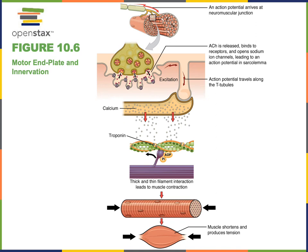The mechanism of excitation-contraction coupling is initiated with the release of acetylcholine from the somatic motor neuron's axon terminal. Acetylcholine diffuses across the synaptic cleft and binds to the nicotinic acetylcholine receptors on the motor end plate. These nicotinic acetylcholine receptors are ion channels that open, allowing sodium ions to enter the cell.